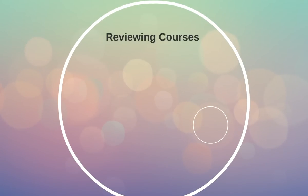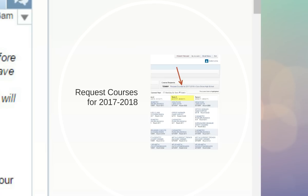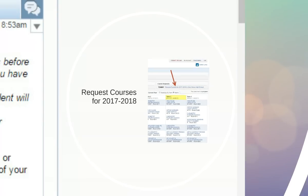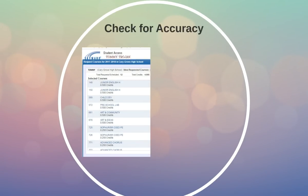Once you're logged into Skyward, go to your home page and select the schedule tab on the left of the screen, indicated by the red arrow. Once you've done that, it will bring you to your current schedule. You'll need to navigate over to the tab on the right that says 'Request Courses for the 2017-18 school year at Cary Grove High School.' When you click that, it should bring you to your course requests for the next school year.